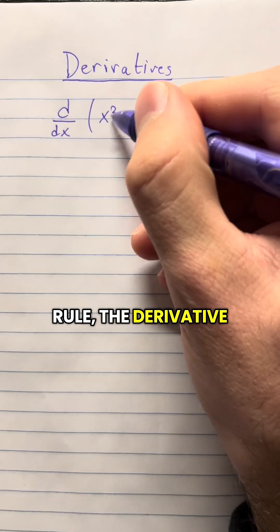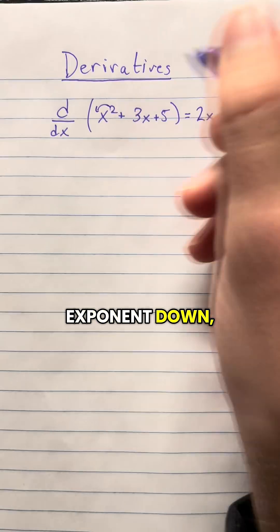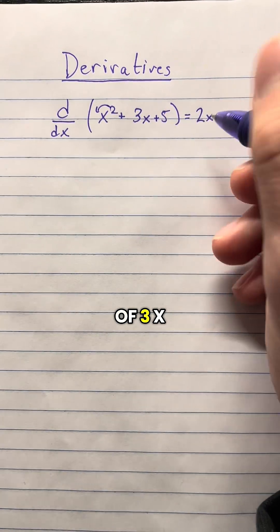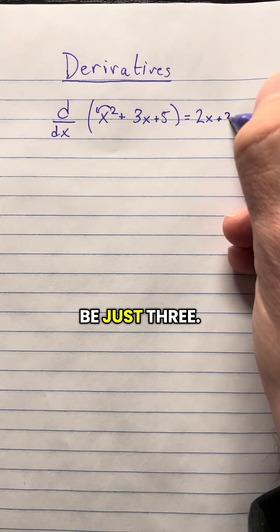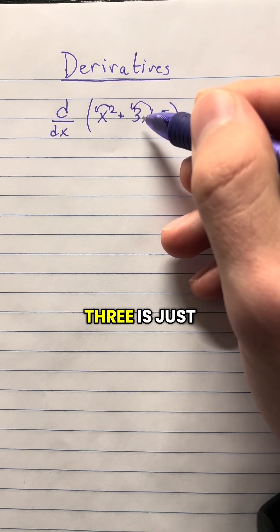Well, using the power rule, the derivative of x squared is going to be 2x. Just bring this exponent down, decrease it by 1. The derivative of 3x is going to be just 3 because we bring this down, the 1, which 1 multiplied by 3 is just 3.